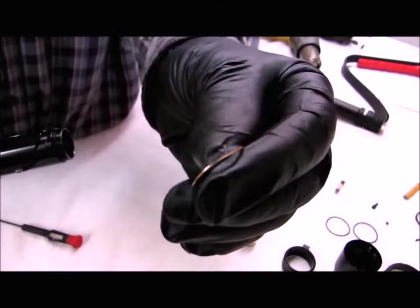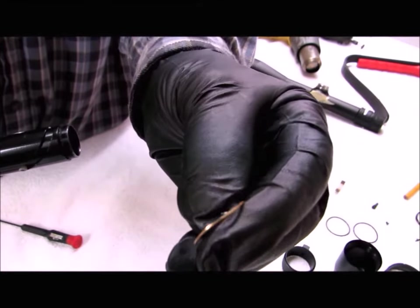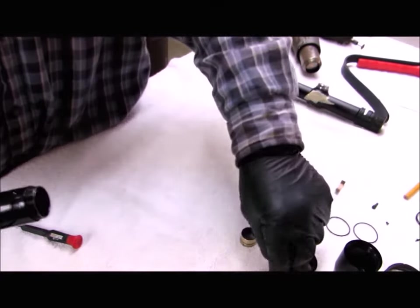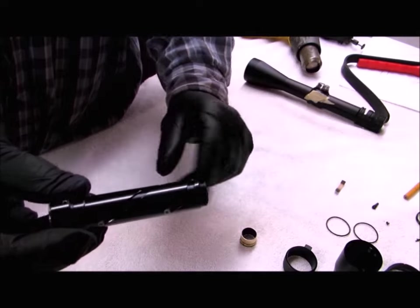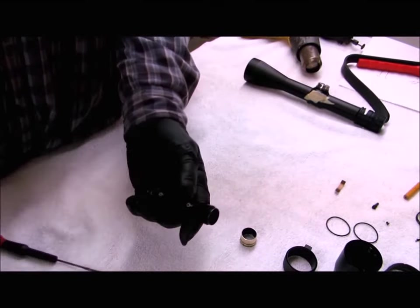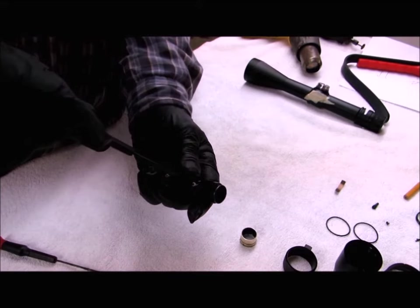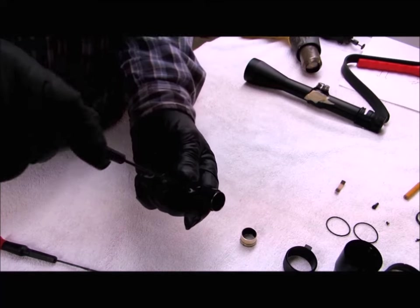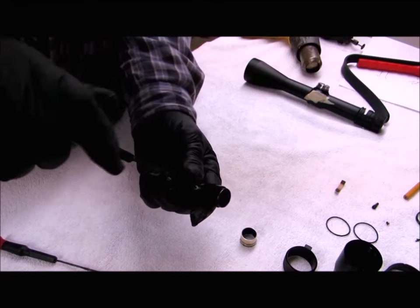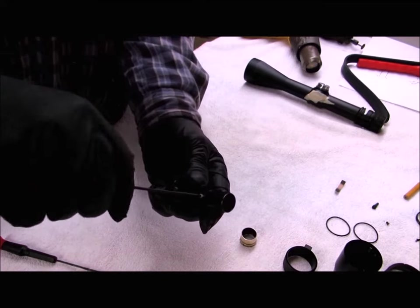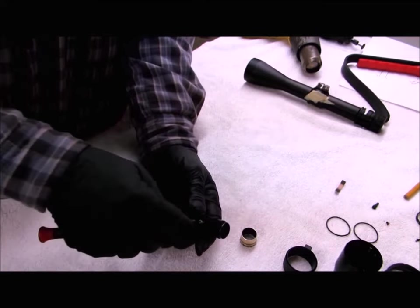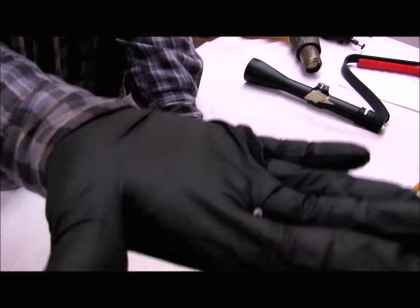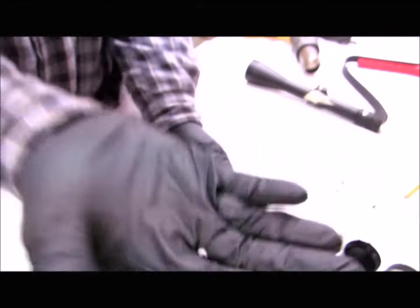When you reassemble you don't want to tighten this up so tight that your magnification ring is hard to turn. There will be a slight gap between this spring and this tube. I'll go ahead and take one of these little bushings out so you can see it. If you don't need to disassemble any of this, if there's not an obvious problem then I wouldn't take it apart. And there's the screw and the bushing.